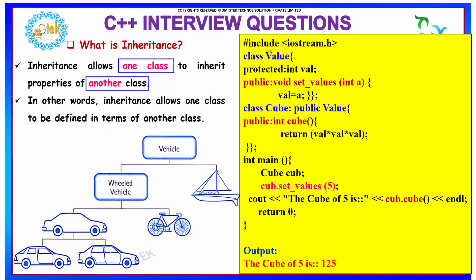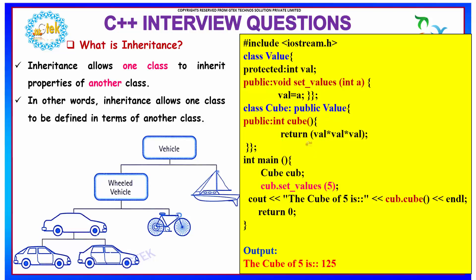If you see over here, we have a class called 'value' and it has its own set of variables and functions. We also have a derived class — 'class cube' is a derived class of 'class value'. It is a public derivation, as you can see. Since it is inheritance, the derived class can reuse the variable 'val' from the base class — it need not declare 'val' again; it can directly use it. That is what is meant by the derived class inheriting the properties of the base class.